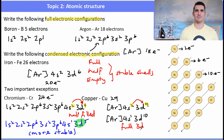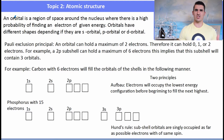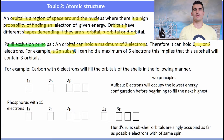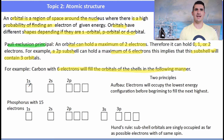Now we need to talk about orbitals. An orbital is a region of space where we will find electrons, and orbitals have different shapes depending on whether they are s, p, or d. An orbital can contain a maximum of two electrons — zero, one, or two. A p subshell holds six electrons, meaning it has three orbitals.